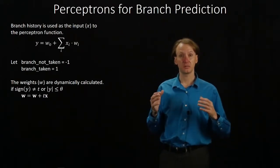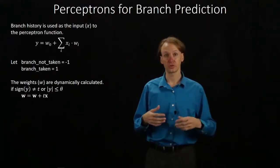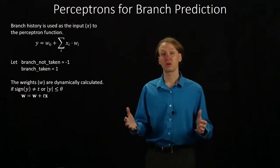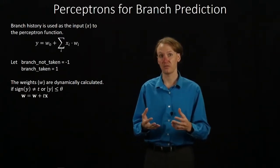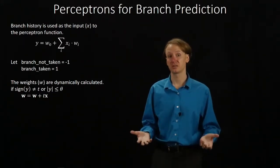So these can be used in pretty much any of the types of predictors we've seen already. Whether you're just looking at local history, global history, some combination of them, or some really complex scheme that takes into account all sorts of different conditions that you could have. You can use perceptrons in place of the n-bit branch predictors in all sorts of cases.